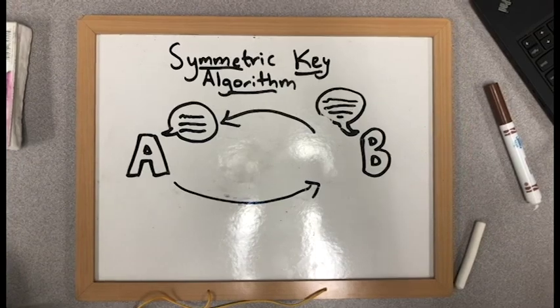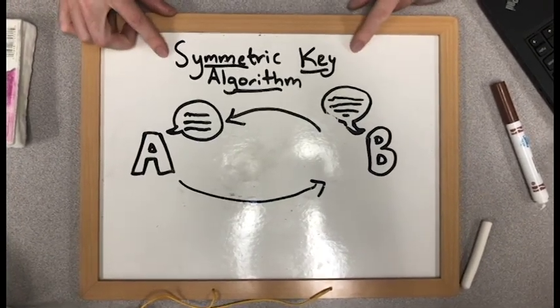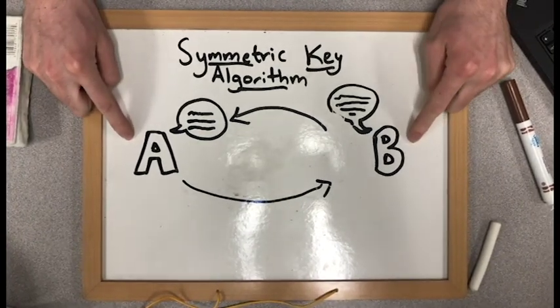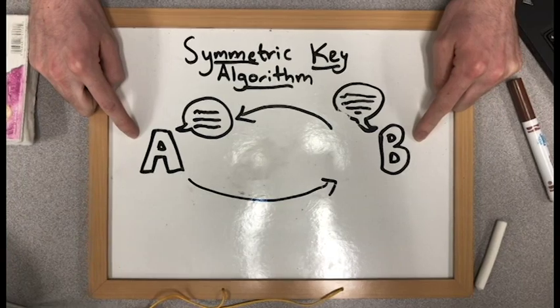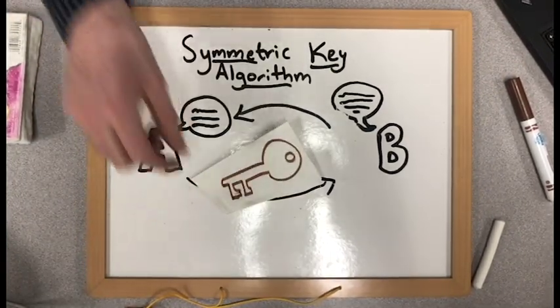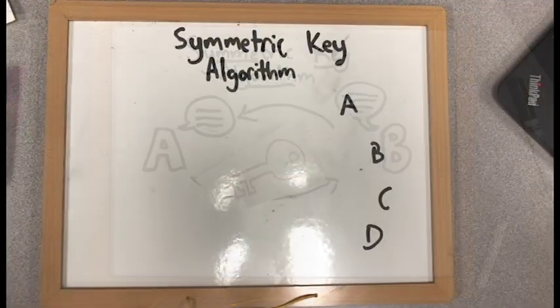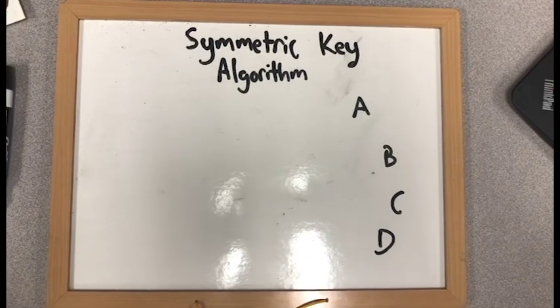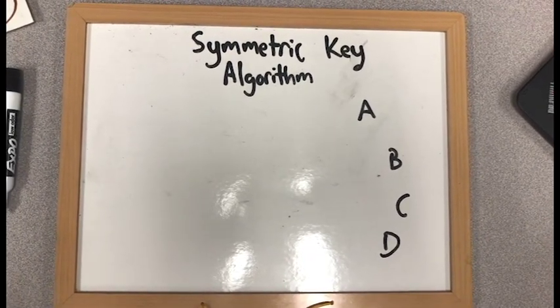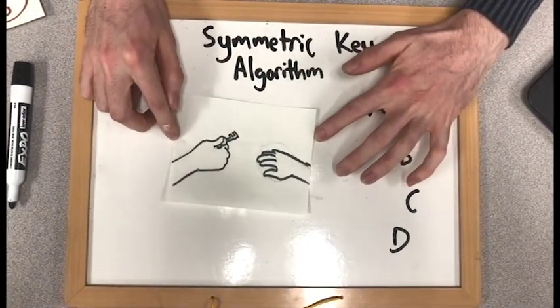In the dawn of cybersecurity, the first method used for encryption was the symmetric key algorithm. This method works as follows. Say there are two parties, A and B, that want to exchange confidential information. They keep this information a secret by encrypting it with a secret key that both parties must know before they begin communicating. This method has multiple flaws. For one, they have to establish a secret key that they both already know. This is extremely difficult to do unless there is direct contact between the two parties.